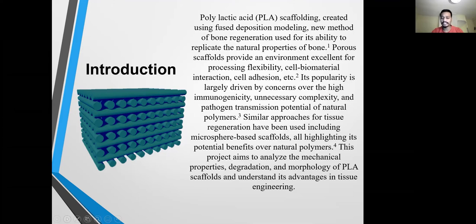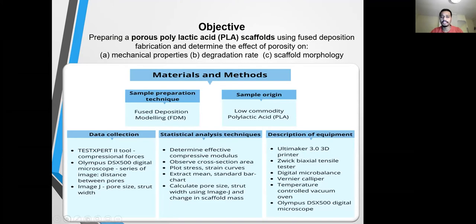This project aims to analyze the mechanical properties, degradation, and morphology of PLA scaffolding and understand its advantages in tissue engineering. This involves fabricating the polylactic acid scaffold using fused deposition modeling and determining the effect of porosity on mechanical properties, degradation rate, and scaffold morphology.